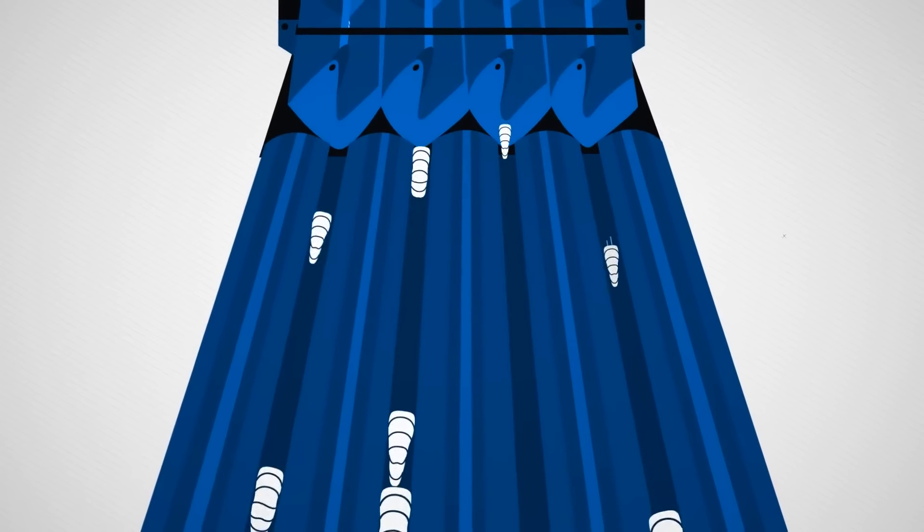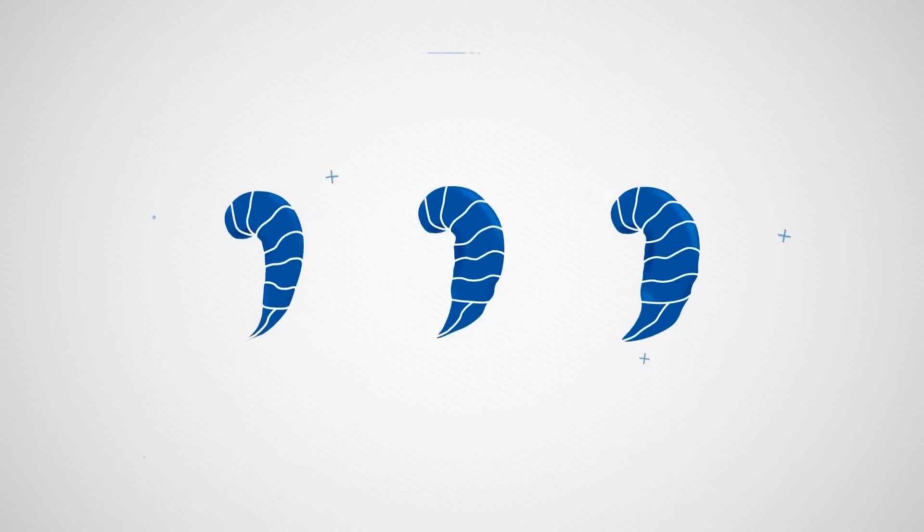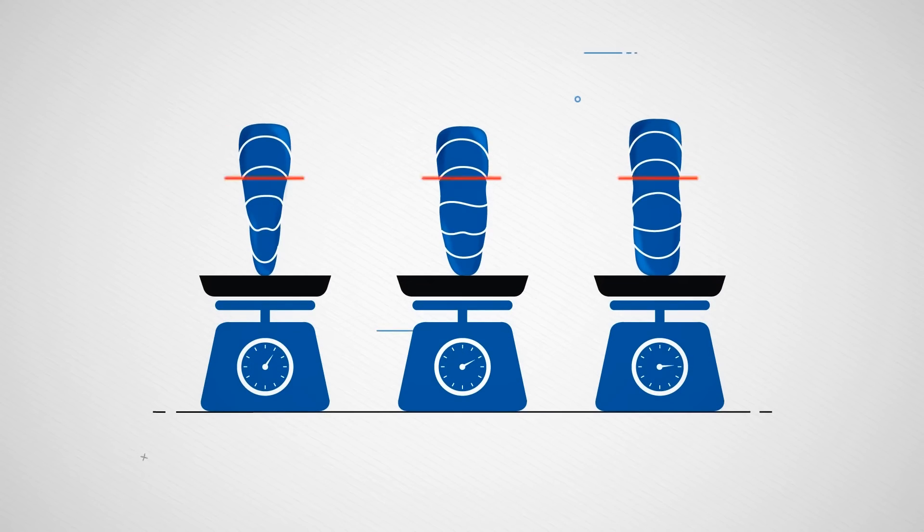Traditional roller graders sort using only the width of a shrimp. This results in inconsistent and error-prone measurement.